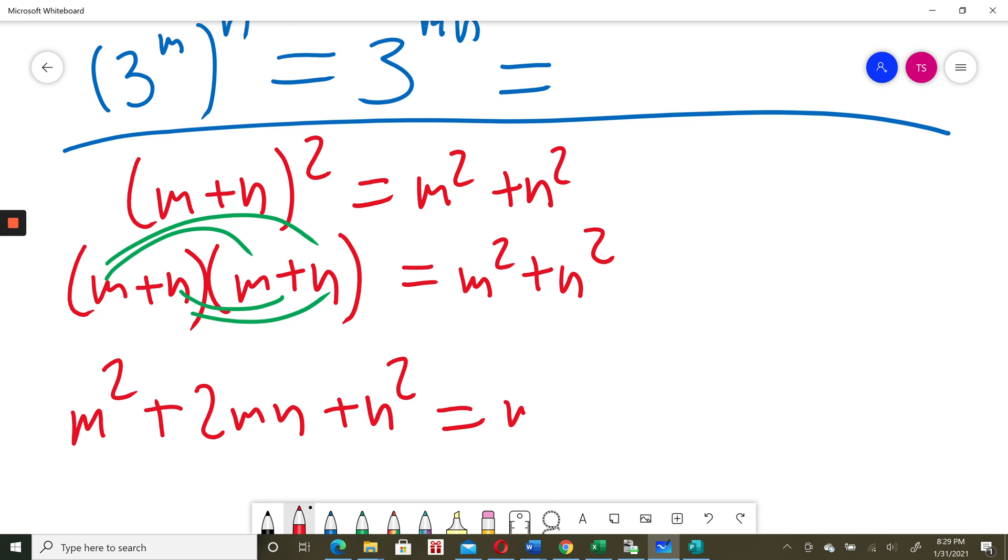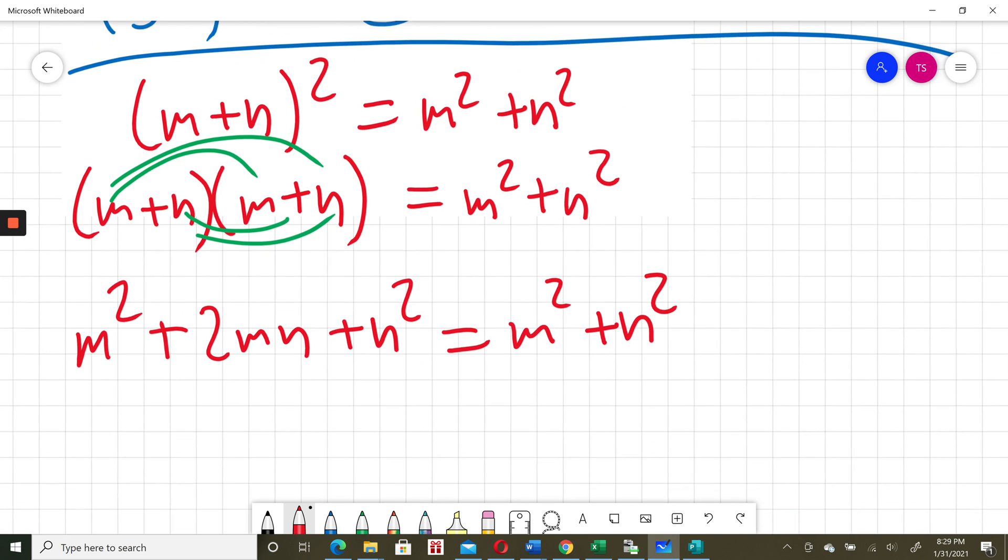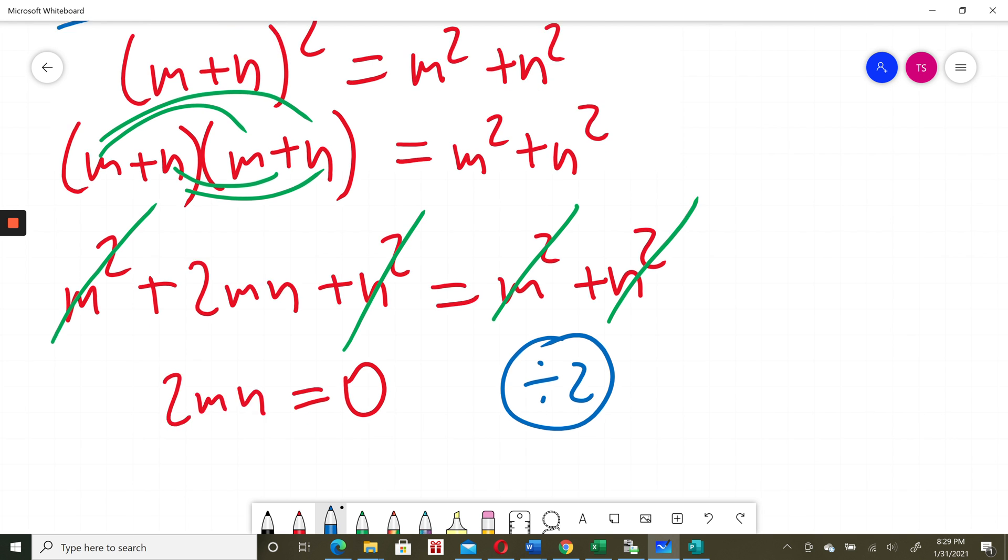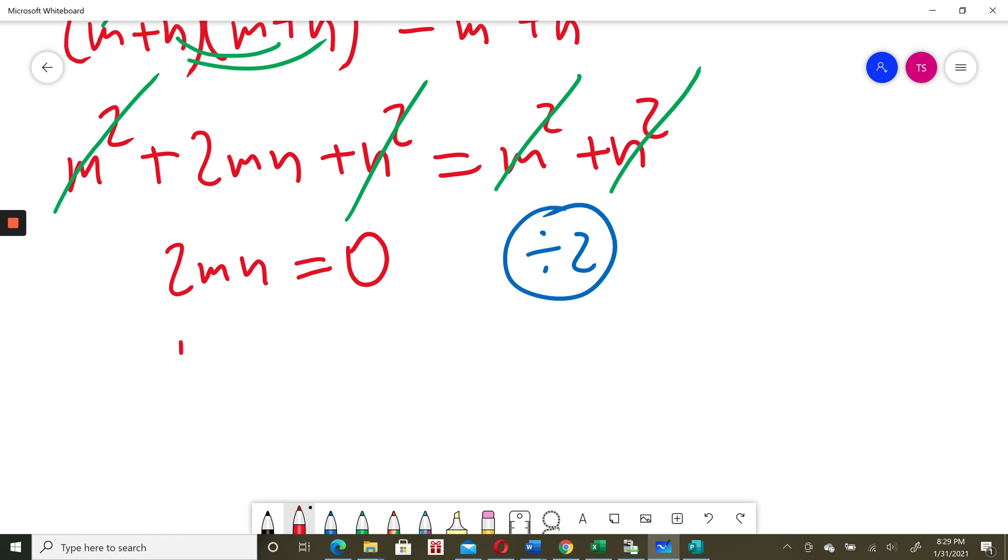So m² + 2mn + n² = m² + n². I can see the same terms on the left and right. If I subtract m² from both sides and subtract n², I get 2mn = 0. Dividing both sides by 2, I get mn = 0.